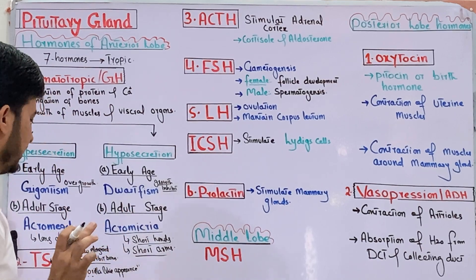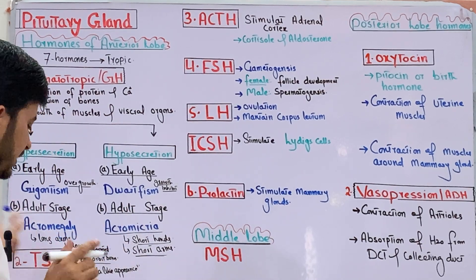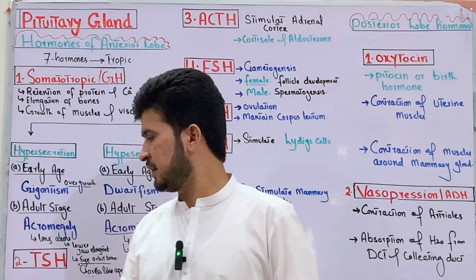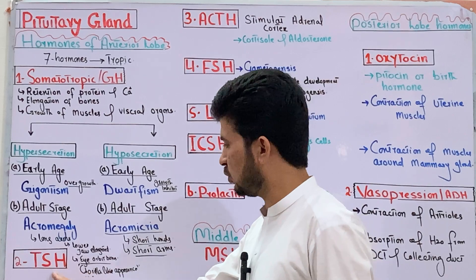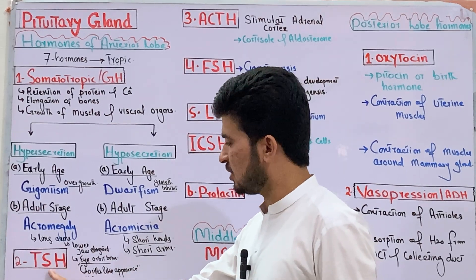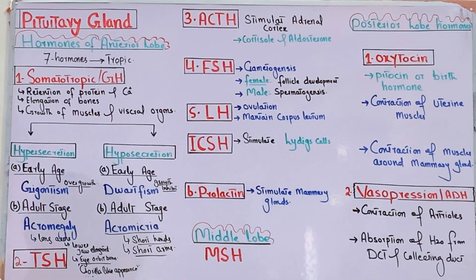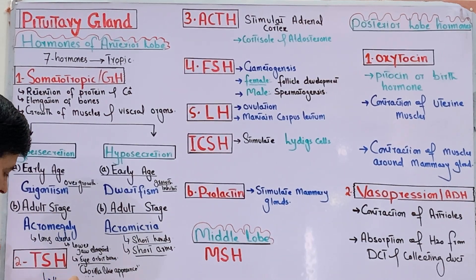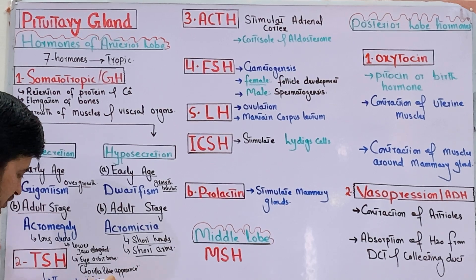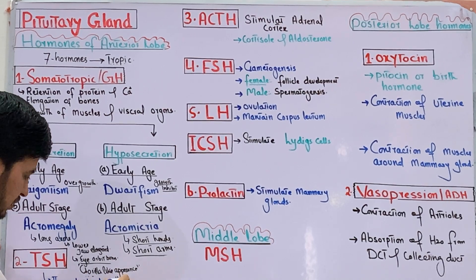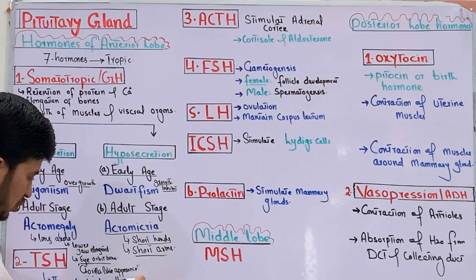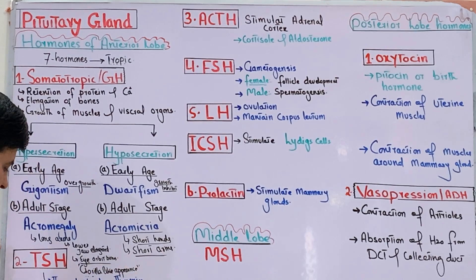The second hormone secreted by the anterior lobe is TSH — thyroid stimulating hormone. This hormone stimulates the thyroid gland, and when the thyroid gland is stimulated, it produces thyroxine.